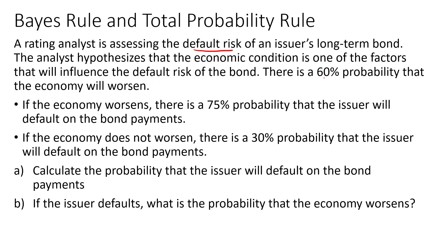There is a 60% probability that the economy will worsen, and a 40% probability that the economy does not worsen. Given that the economy worsens, there is a 75% probability that the issuer will default on the bond payments. And if the economy does not worsen, there is a 30% probability that the issuer will default on the bond payments.